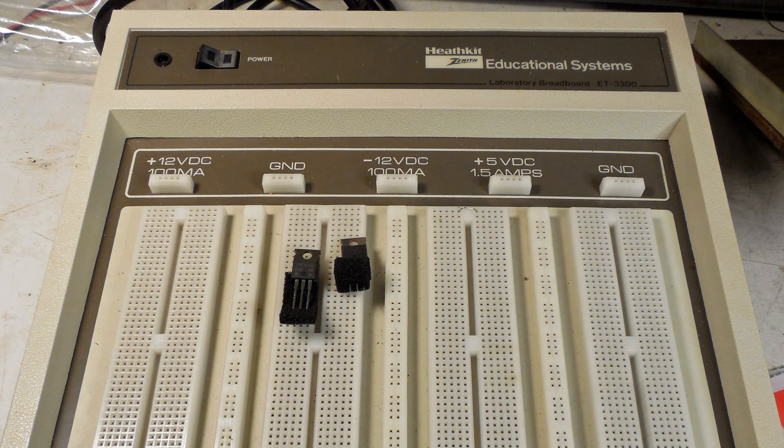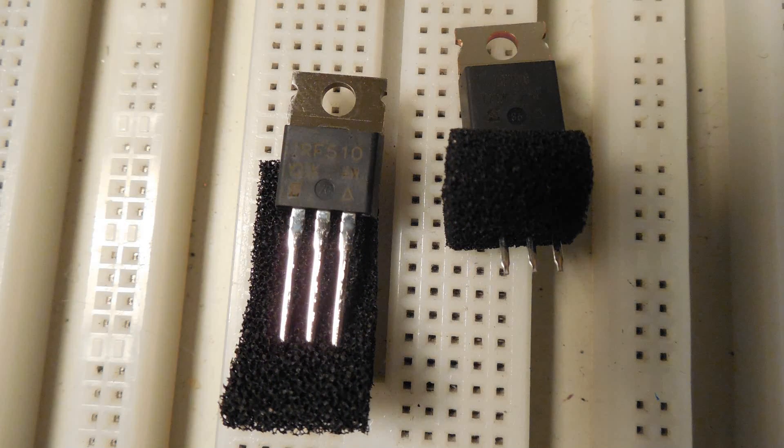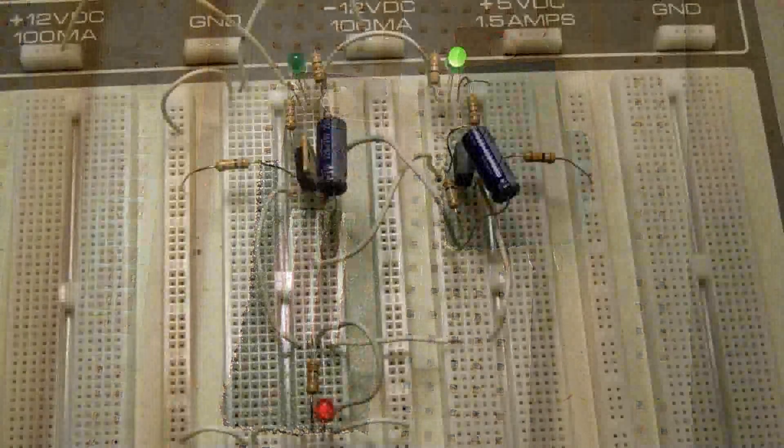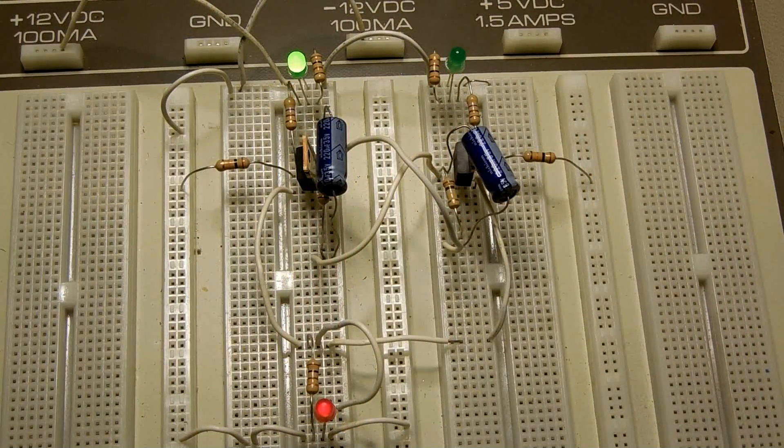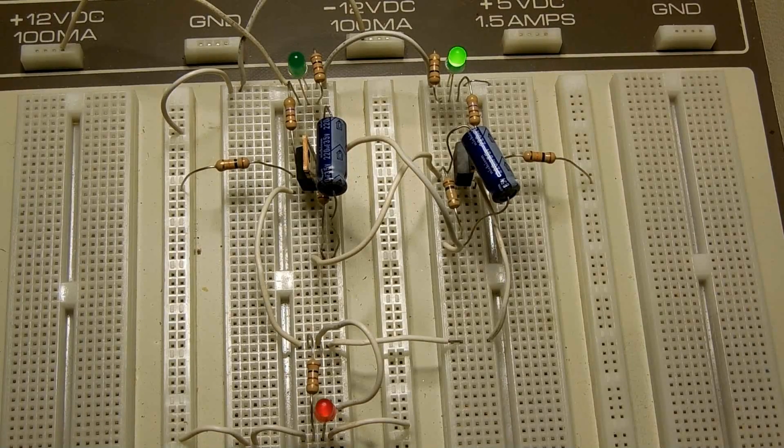I have these two n-channel MOSFETs and I thought I'd build something with it. And this is the circuit that I came up with. It's a multivibrator circuit.